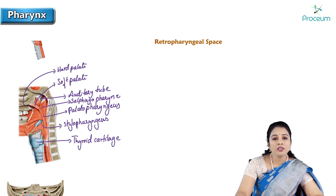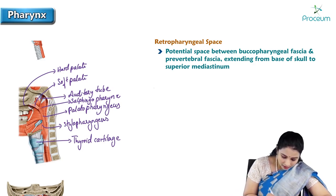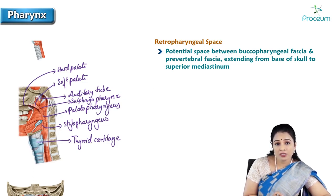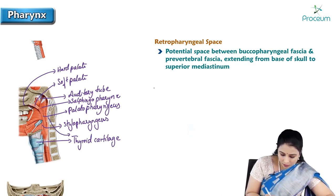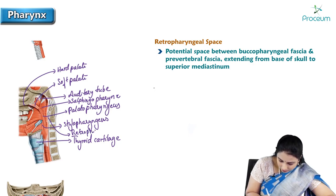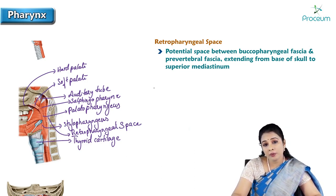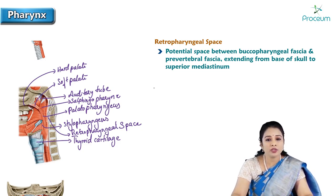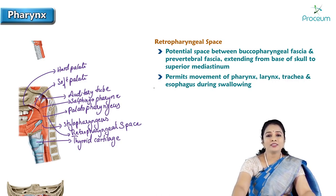Next, regarding the retropharyngeal space: it is the potential space between the buccopharyngeal fascia and the prevertebral fascia, extending from the base of the skull to the superior mediastinum. The gap between the buccopharyngeal fascia covering the pharynx and the prevertebral fascia covering the vertebra is termed the retropharyngeal space. It permits the movement of the pharynx, larynx, trachea, and esophagus during swallowing. This completes all about the pharynx.